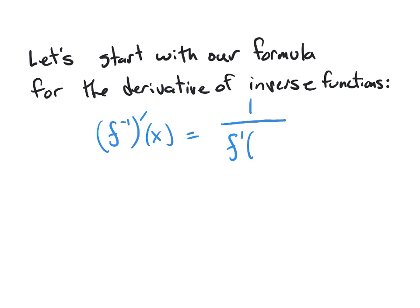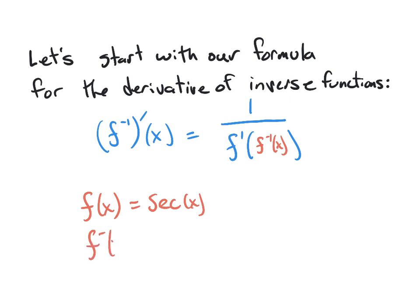I'm going to put the f-inverse of x in red here, just so you can see that those are two different things. That was our formula. Basically, what this is saying is we have two functions: f of x and the inverse function. If we're doing inverse secant, our f of x would be secant of x, and our f-inverse of x would be inverse secant of x.